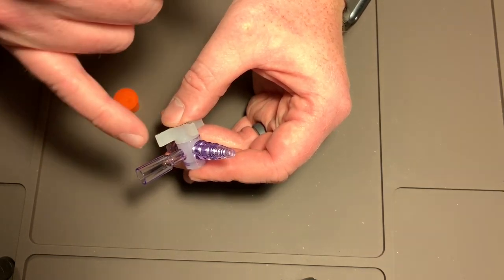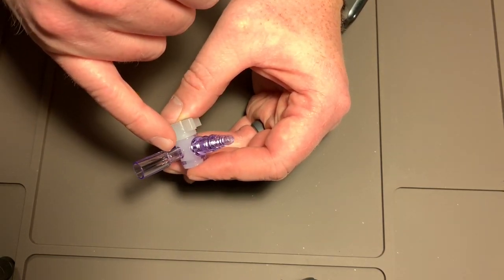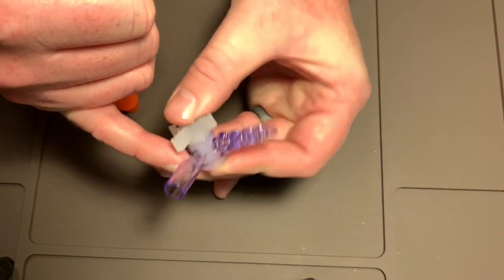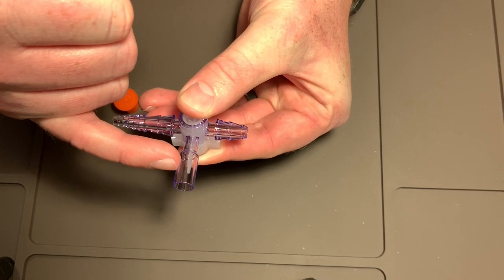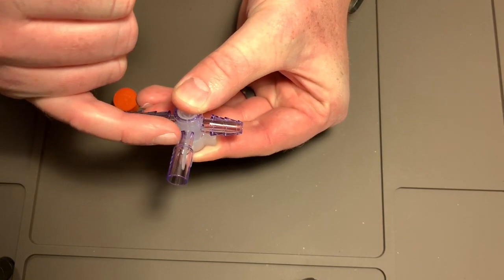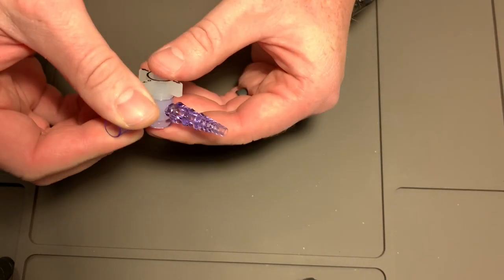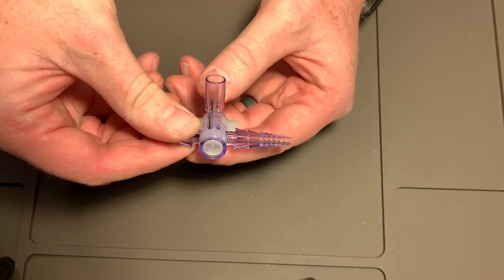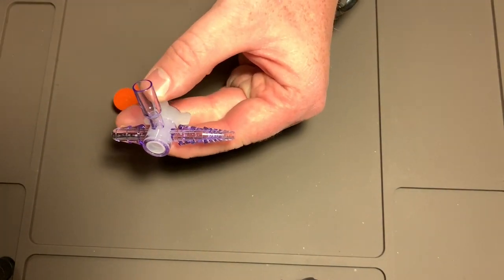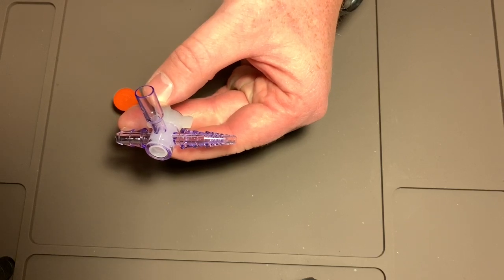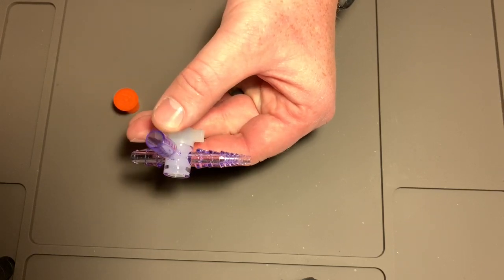And over time that can gunk up your valve and you might need to replace it. Also, whatever medications you're giving, that means some of the medication stays here in the tube portion rather than actually going to your patient. So that you can actually get a good visual of this, I'm going to drop a little bit of milk in here so you can see something that's got a little bit of color rather than just water.